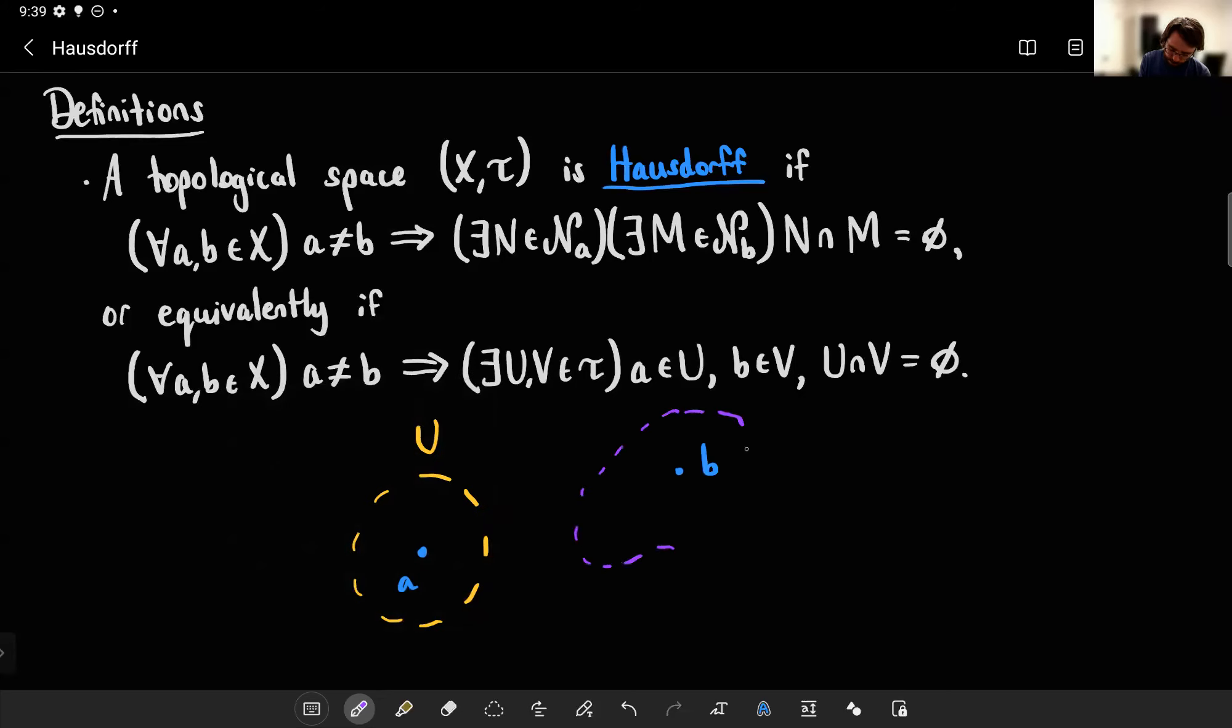And again, they don't have to be open balls or anything. We're in a topological space, so they might be kind of ugly. But at the very least, you can find open sets U and V that are disjoint from one another.